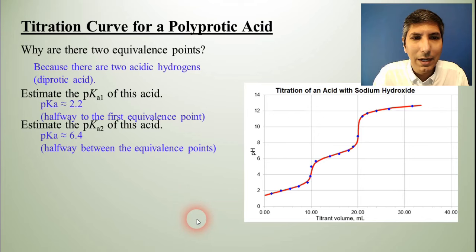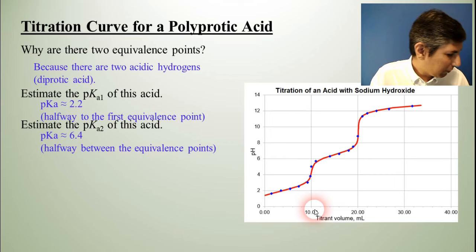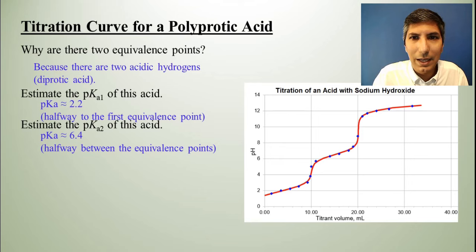So that's how you can use a titration curve like this to determine a Ka. In fact, multiple Ka's in the case of this polyprotic acid.